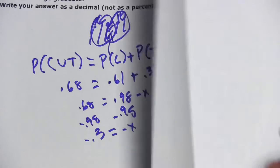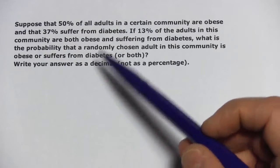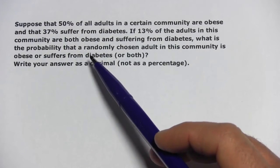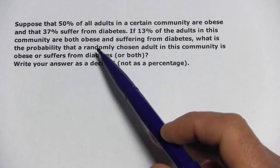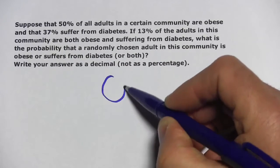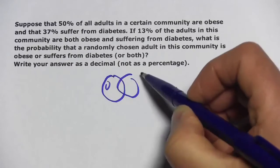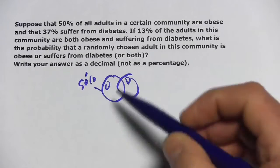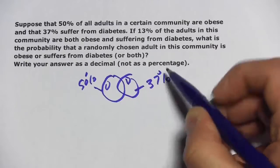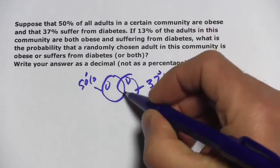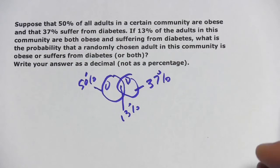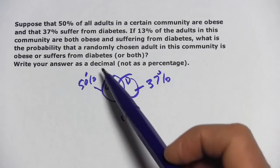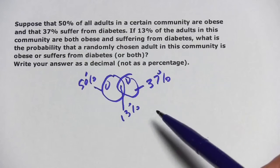Let's try another one. Suppose that 50% of all adults in a certain community are obese and 37% suffer from diabetes. If 13% of the adults are both obese and suffering from diabetes — let's draw this out. We have obese at 50% and diabetes at 37%, with 13% in the intersection. What is the probability that a randomly chosen adult is obese or suffers from diabetes or both? That's the union.